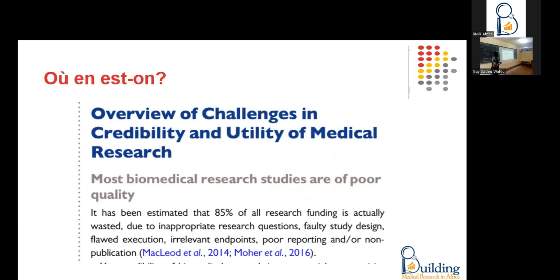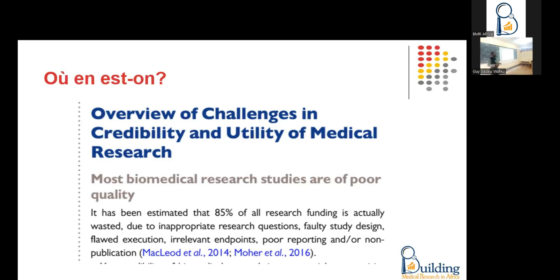If we look at what exists today, we will see that 85% of published and financed research represents a waste of resources. We are not even talking about student theses — I am talking about published articles. 85% of financed research is a waste of resources, because the research question is not good, or the type of research is not good, or the work is not correct, or the results are not well reported. Only 15% of research is made according to the rules of research work.